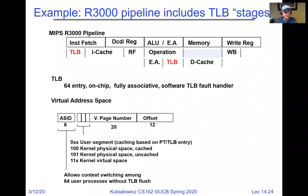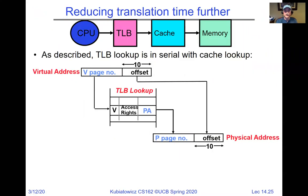If the TLB lookup takes too long, the entire cycle time of the system gets slower and the CPU is just plain slower. This argues that the TLB ought to be direct-mapped or have very low associativity. But to keep conflict misses low, you want high associativity. The solution is to keep the TLB small so it can be highly associative yet still fast. The virtual page number is pulled from the address and looked up in the TLB to begin address translation.